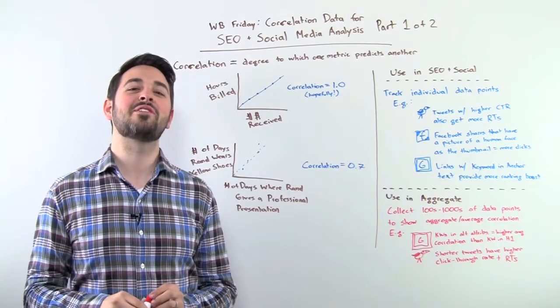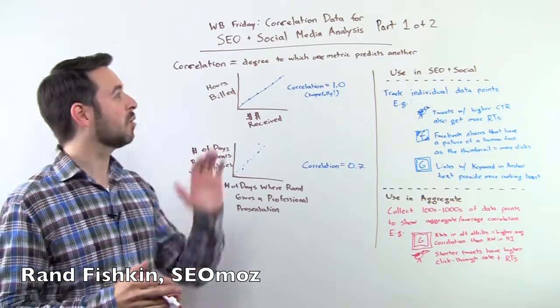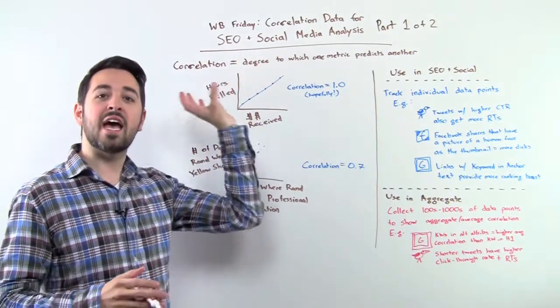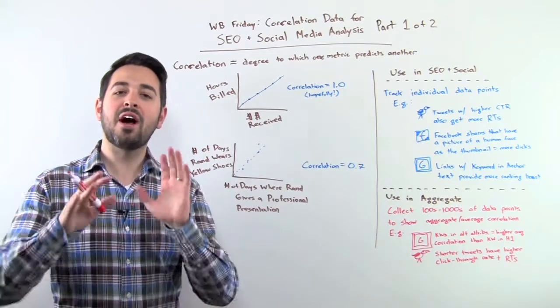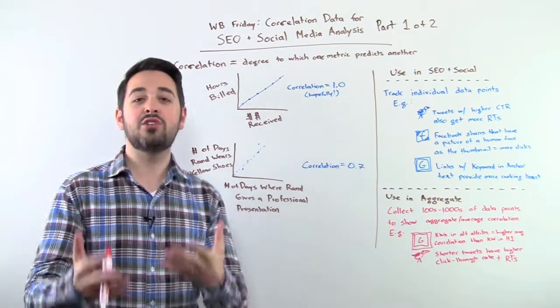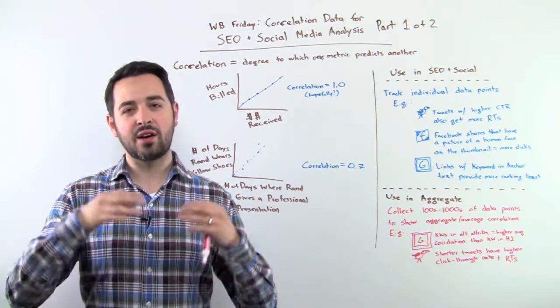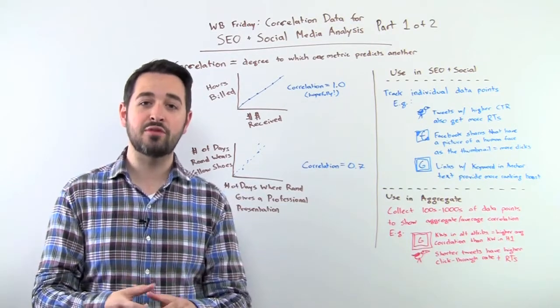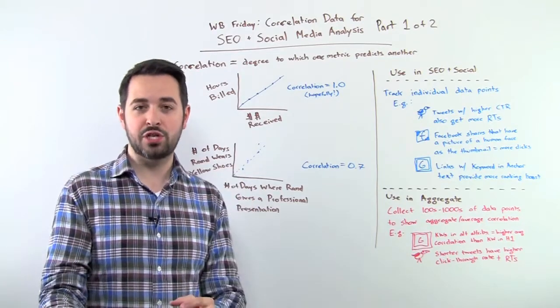Howdy, SEOmoz fans. Welcome to another edition of Whiteboard Friday. Today we've got a great topic, a really exciting topic. We're going to be talking about correlation data and how you can use it in SEO and social media analysis. A lot of you already use correlation data and many of you have probably seen on our blog and in our early release of data from our ranking factor survey this year that we're going to be presenting a bunch of correlation data.